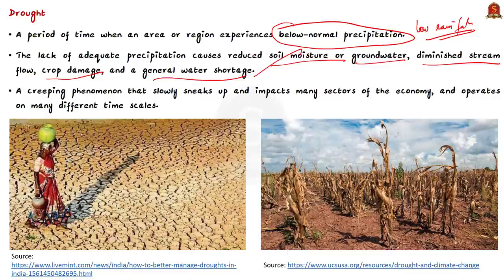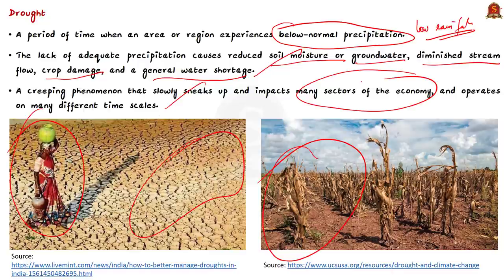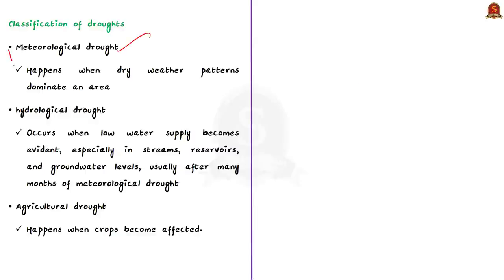The problem with drought is that it is very hard to define and identify. Drought is a creeping phenomenon — it slowly sneaks up and impacts many sectors of the economy, operating on many different timescales. Unlike a cyclone where we can know exactly when it is coming and who will be affected, drought has a very long impact: no rain leads to no agriculture, which leads to food shortage and rising food prices, affecting the entire market. As a result, the climatological community has defined drought into four types: meteorological drought, hydrological drought, agricultural drought, and socio-economic drought.